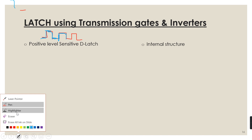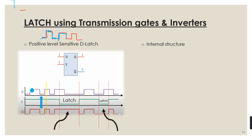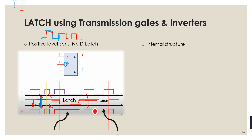Let us understand the working of a positive level-sensitive D latch. It is controlled by an enable input E. From the timing diagram, if the enable input is high (logic 1), the output follows the input — the input is simply copied onto the output. But if the enable falls to 0 (logic low), the previous output value is latched — the output remains unchanged. If enable goes high again, it becomes transparent and output follows input once more.